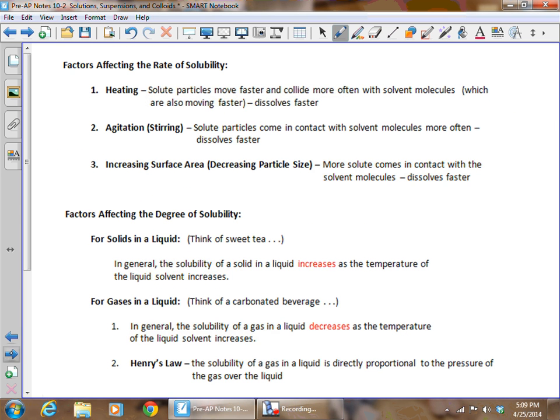Factors that affect the rate, how fast something dissolves: heating it up. If we have a hot solution, think of sweet tea. Having sugar put into hot tea is going to make the particles move faster, collide more often, and it's going to dissolve faster. If we stir it up, we're making those solid particles come in contact with solvent faster. And increasing surface area, or decreasing particle size, like using granulated sugar versus sugar cubes. The granulated sugar dissolves much more quickly because its surface area is larger.